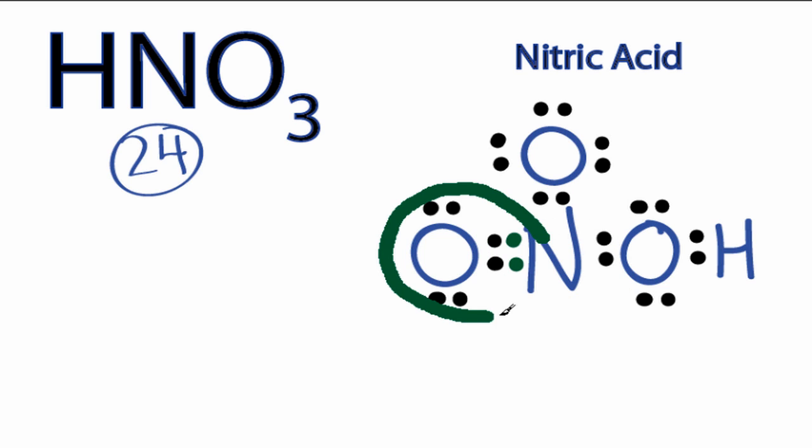This oxygen right here has 8. And we've still used only 24 valence electrons. When we calculate our formal charges, this oxygen up here will have a negative 1, and the nitrogen will have a positive 1. Everything else will be 0. So that looks pretty reasonable. It adds up to 0 here.